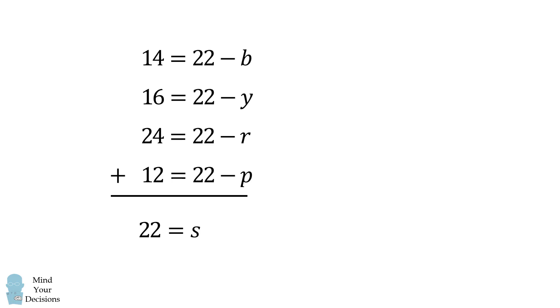We'll substitute into these equations and solve for each variable. From the first equation, we'll get that b is equal to 8. From the second, y is equal to 6. From the third, r is equal to negative 2. And from the last equation, p is equal to 10.